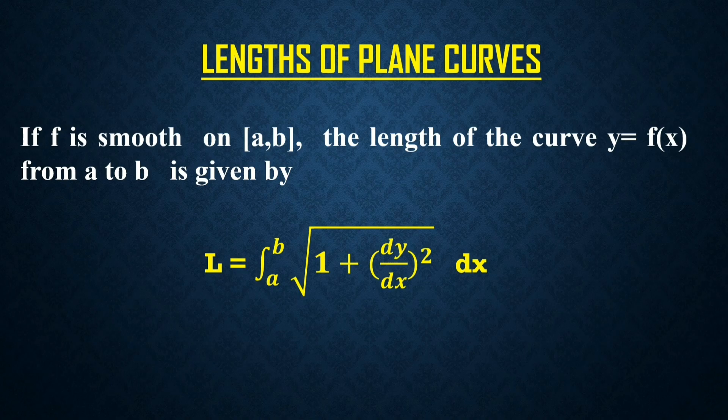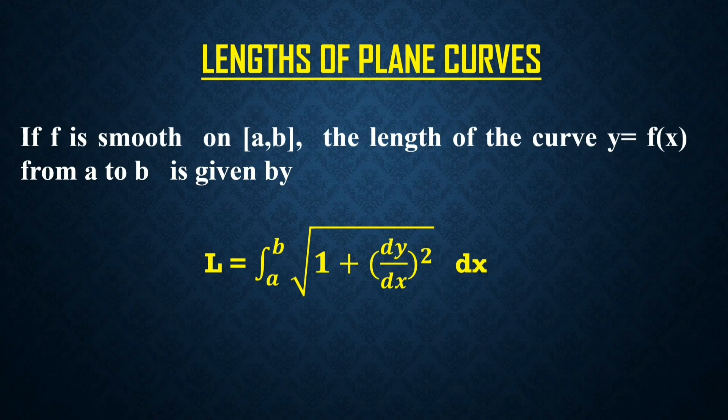Lengths of plane curve. If f is smooth on closed interval [a, b] — smooth means having a continuous first derivative — the length of the curve y = f(x) from a to b is given by: L = integral from a to b of √(1 + (dy/dx)²) dx.